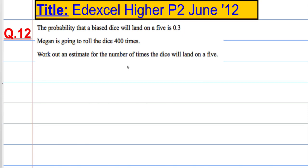The probability that a biased dice will land on a 5 is 0.3. Megan is going to roll the dice 400 times. Work out an estimate for the number of times the dice will land on a 5.